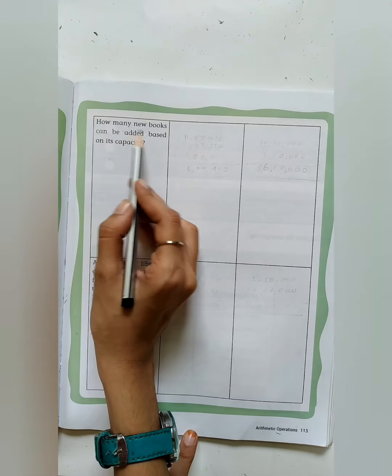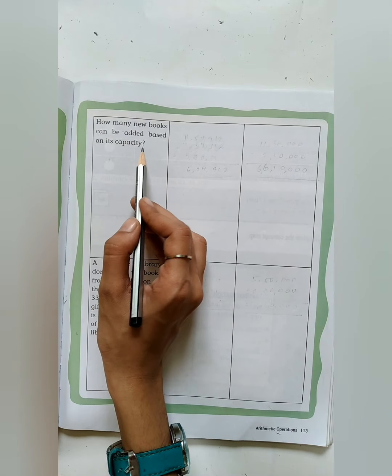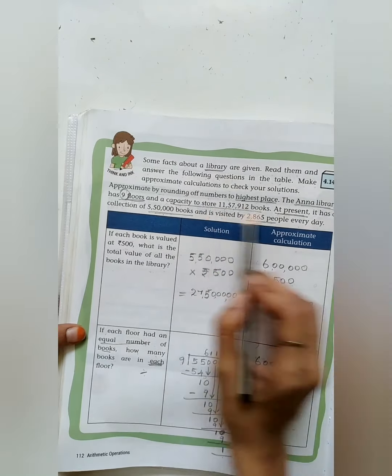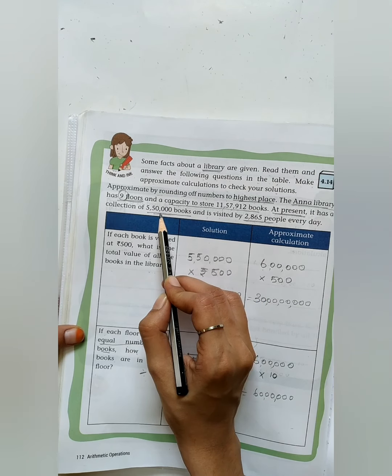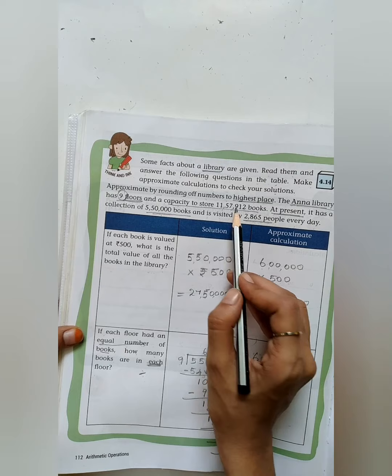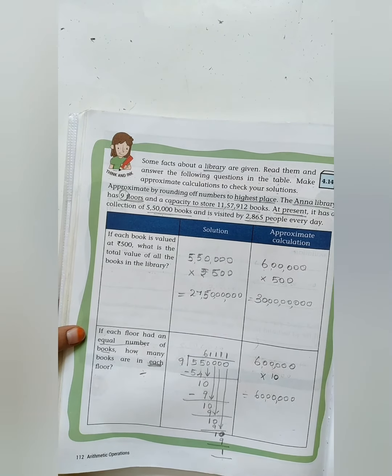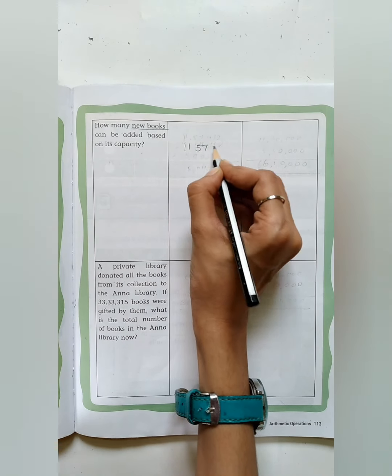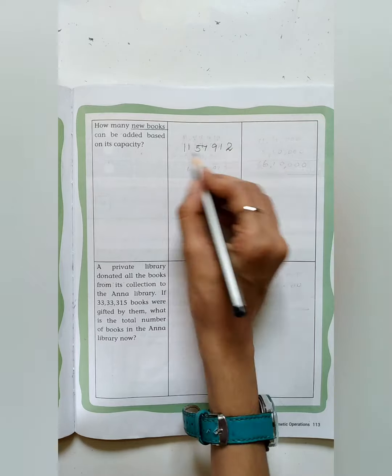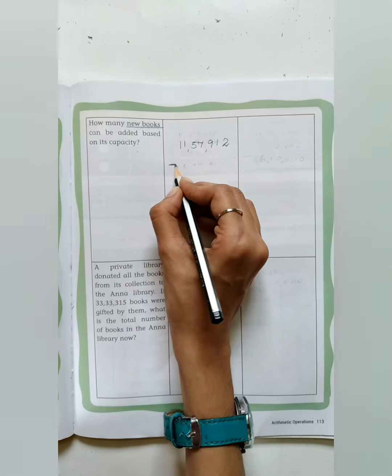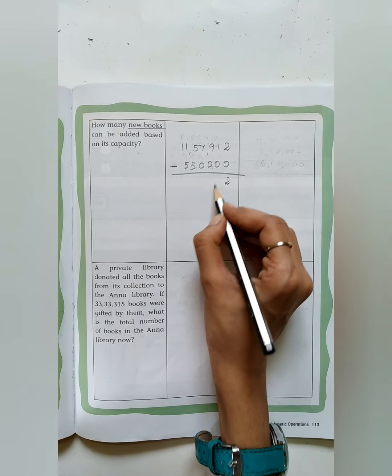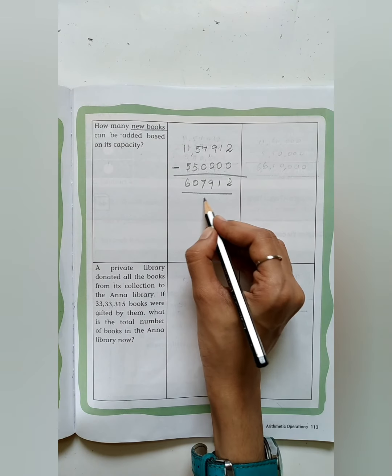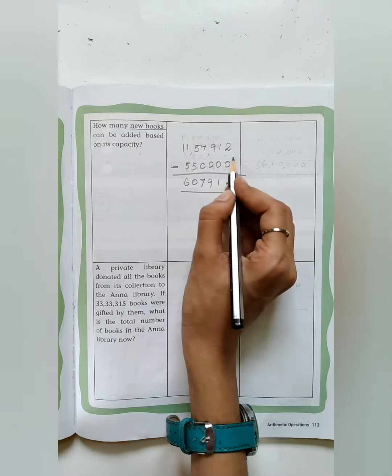Now move on to the next page. How many new books can be added based on its capacity? First we have to see what is the capacity of the library. See the before page, the total capacity is 11,57,912. But already at present 5,50,000 books are there. We have to find out remaining how many books can hold in the library. To find out the remaining, we have to do the subtraction. We just do the subtraction here. You have to do the subtraction in between these numbers: 2-0 is 2, 1-0 is 1, 9-0 is 9, 7-0 is 7. Then this will be your answer. You know subtraction very well.